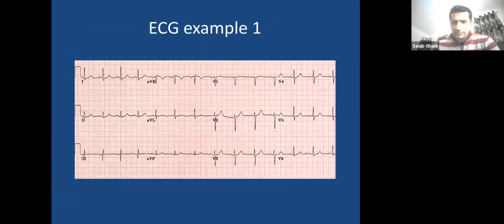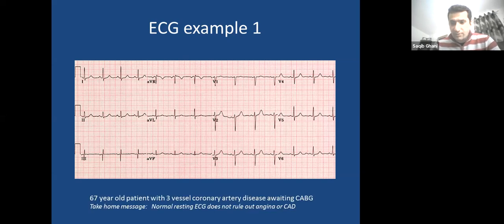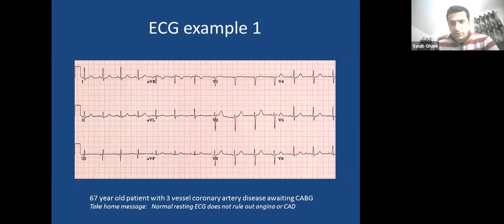Looking at ECG examples: this first ECG is a normal ECG — no ischemic changes. But this patient has severe three-vessel disease and is undergoing bypass surgery in a few days. The take-home message: a normal resting ECG neither rules out angina nor is diagnostic for coronary artery disease. A normal ECG has no value in the management of angina, though it can provide clues for other problems.